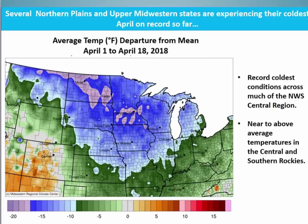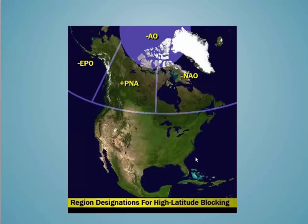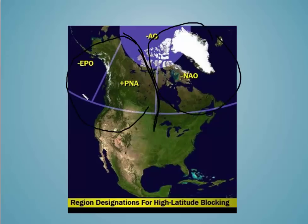Let's take a look at our teleconnections. To remind you of what we're talking about, this is the map of the four different teleconnections we're looking at. There is a Pacific side and an Atlantic side. On the Pacific side we focus on two features: the EPO and the PNA. On the Atlantic side we focus on the Arctic Oscillation and the North American Oscillation. Let's take a look and see what this data is showing.